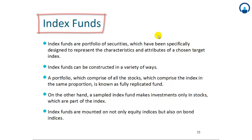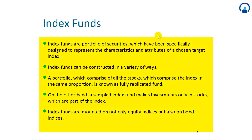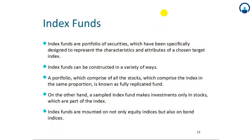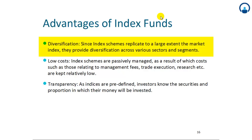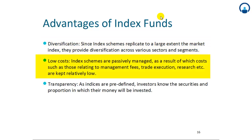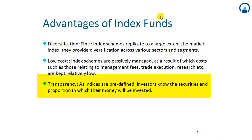Index funds are portfolio securities specifically designed to represent the characteristics and attributes of a chosen target index. Index funds can be constructed in a variety of ways. A portfolio comprising all the stocks in the index in the same proportion is known as a fully replicated fund. A sample index fund means investment only in stocks which are part of the index. Index funds are mounted not only on equity indices but also on bond indices. Advantages of index funds include: diversification — since index schemes replicate the market index, they provide diversification across various sectors and segments; low cost — as passively managed funds, costs relating to management fees, trade execution, and research are kept relatively low; and transparency — as indices are predefined, investors know the securities and proportions in which their money will be invested.